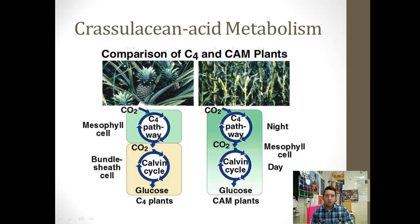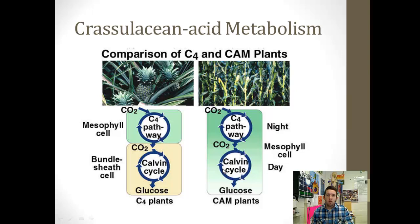In CAM plants — we're talking about cacti and pineapples — these plants live in very dry, very arid conditions, so they can't have their stomata open at all during the day. So they open them up at night. At night, they bring in CO2 and incorporate it into an organic acid, just like the C4 pathway. They use PEP carboxylase, incorporating CO2 into oxaloacetate and malate — also called crassulacean acid. They store the CO2 in that organic acid overnight. In the daytime, the stomata close, and the malate delivers the CO2 to the Calvin cycle where it can then run normally during the day.